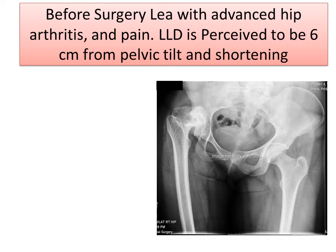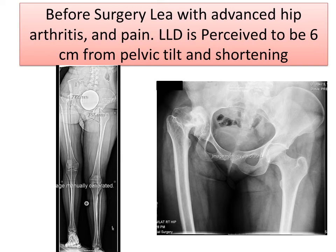Before surgery, Leah had advanced arthritis of the right hip and pain, and the leg length discrepancy was perceived to be 6 centimeters. It was mostly from pelvic tilt and shortening. If you notice on the long x-ray, you can see how the pelvis is quite tilted, and it creates a large perceived leg length discrepancy. It's associated with the deformity and the contracture of the hip.